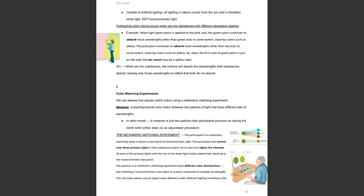Color matching experiments. We can assess how people match colors using a metameric matching experiment. A metamer is a psychophysical color match between two patches of light that have different sets of wavelengths — two patches that participants perceive as having the same color. The participant is shown a test patch of monochromatic light and has control over three primary lights in the comparison patch. They must adjust the intensity of each primary light until the mix looks subjectively identical to the monochromatic test patch.